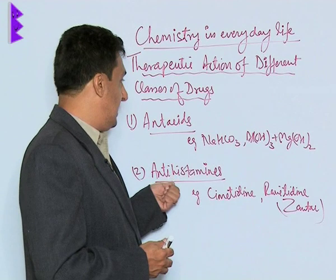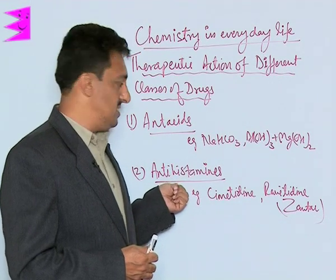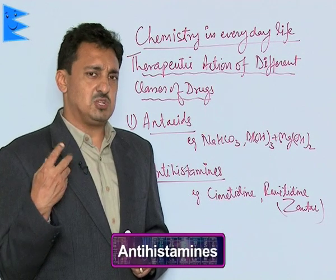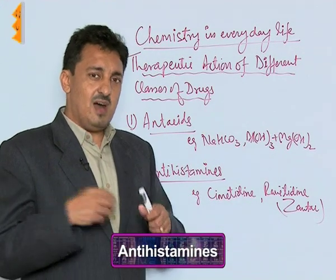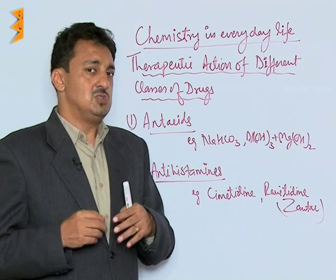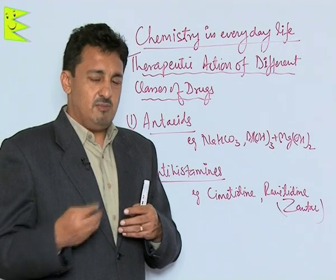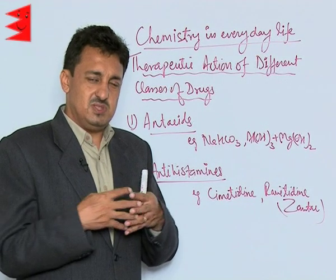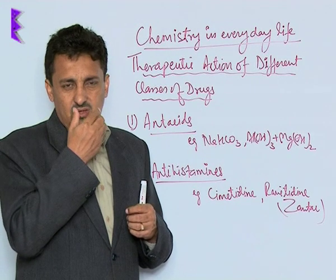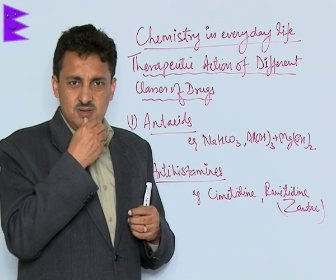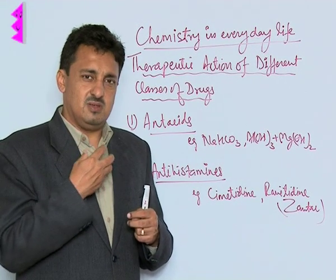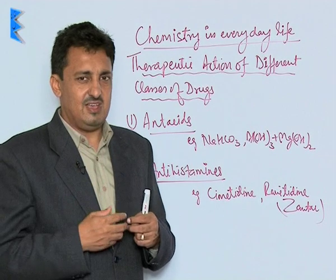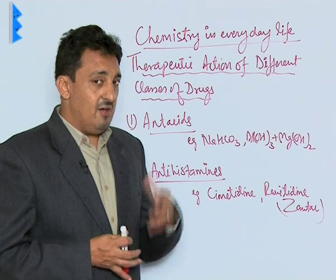The second category of drugs on the basis of their therapeutic actions are antihistamines. Histamines are those chemicals which are actually secreted by the mast cells lying beneath our skin because of allergic action. These chemical substances interact with our skin, nasal passage, or eyes, blocking the nasal passage, causing problems in breathing, conjunctivitis in the eyes, and skin rashes.